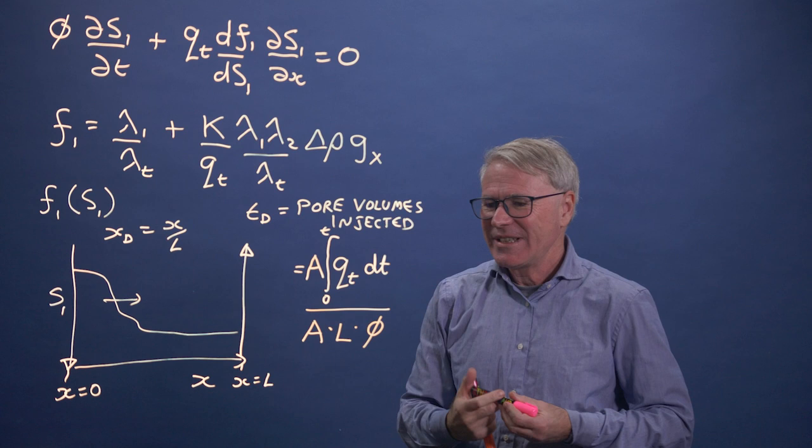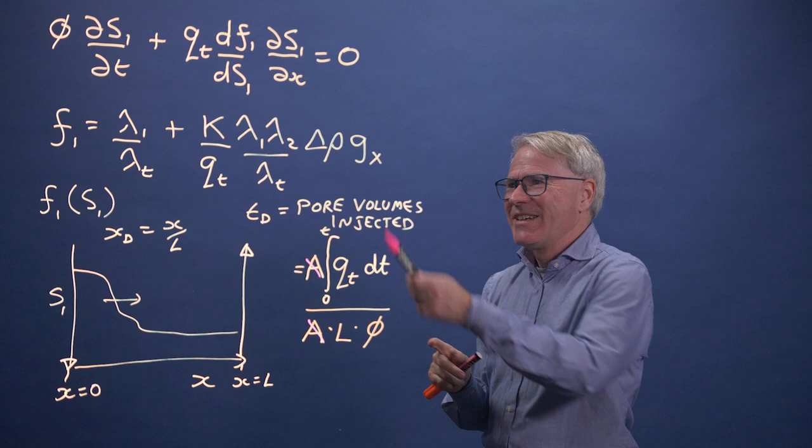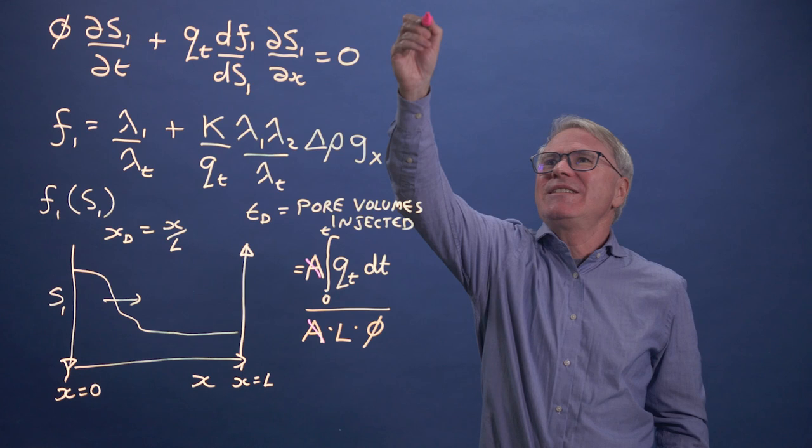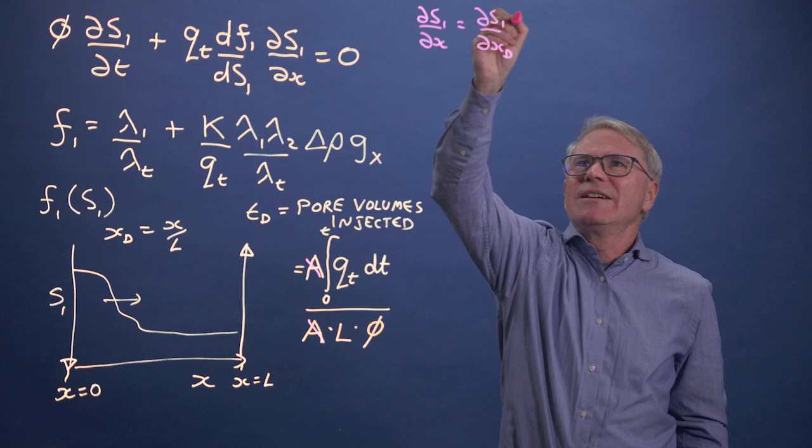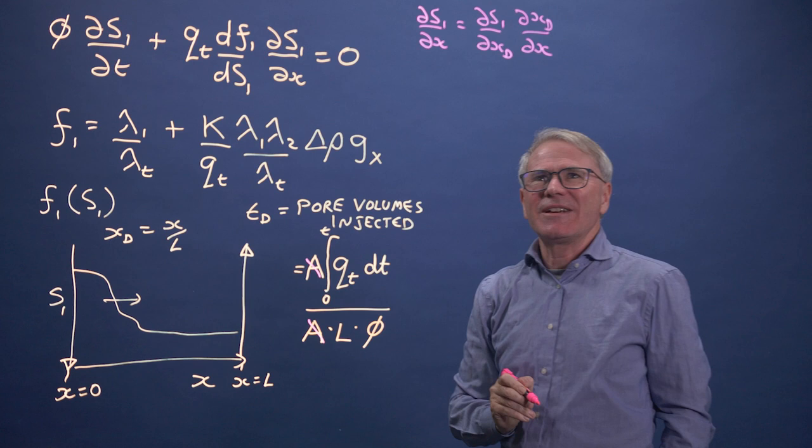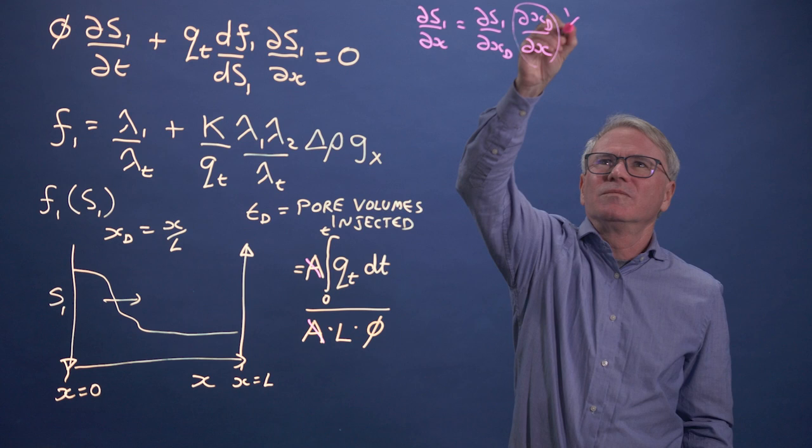Now let's look at this. The dS by dX is easy. dS1 by dX is dS1 by dXD times dXD by dX, and that's just 1 over L. So that's the easy one.